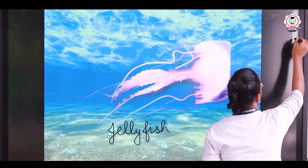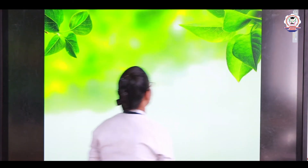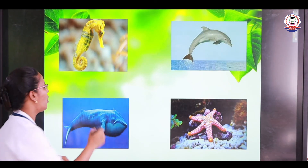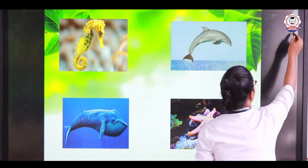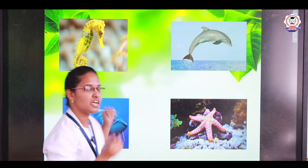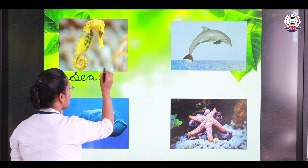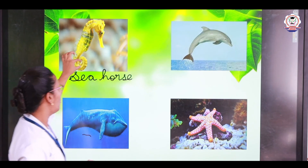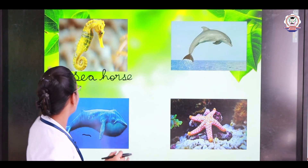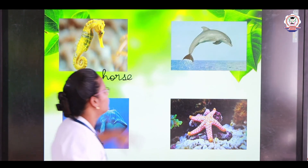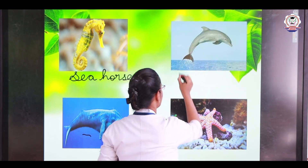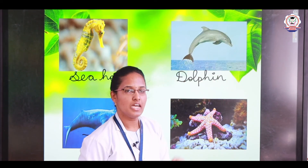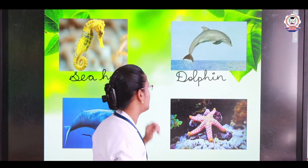Now let's see some more examples of water animals. This is a sea horse — S-E-A-H-O-R-S-E. Why do we call it sea horse? Because it looks like a horse! It has a long tail like a snake. The next is dolphin — D-O-L-P-H-I-N. Dolphin is also one of the water animals and it is a very intelligent animal.